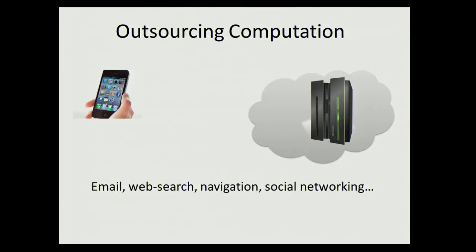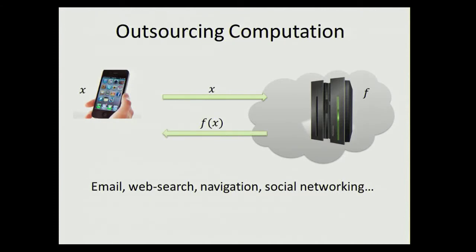So we outsource this computation to a cloud server. This can be modeled by having some input X on the smartphone and some function F that our cloud server knows how to compute, and we want to obtain F of X. We usually do it by sending our location and destination to the server; the server computes the route and sends back F of X.